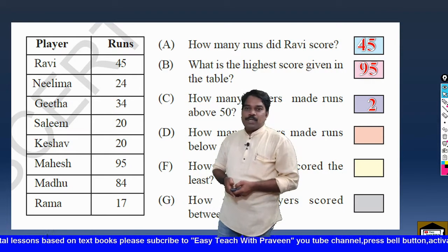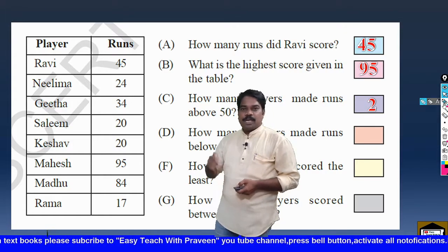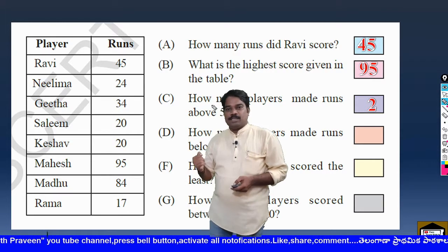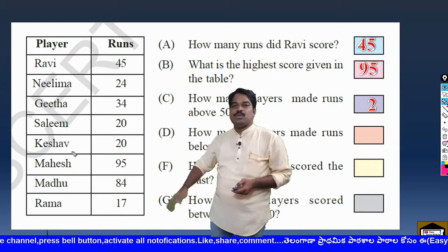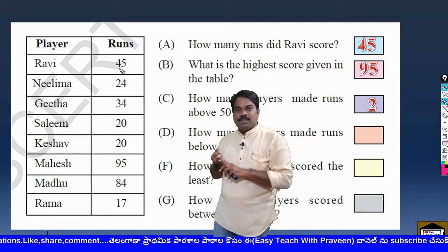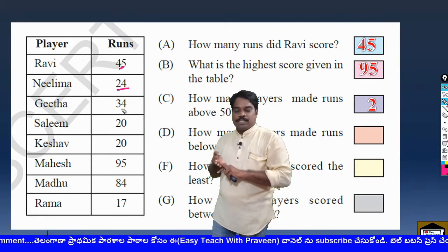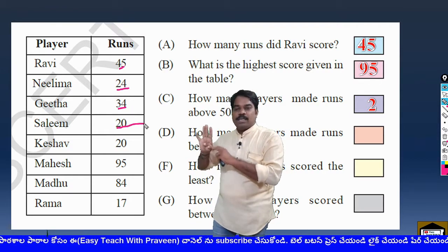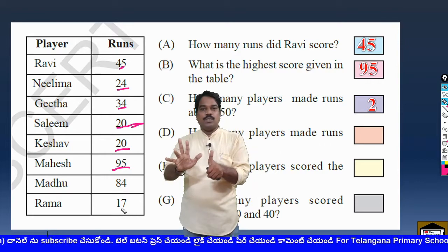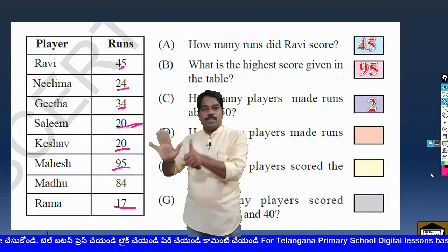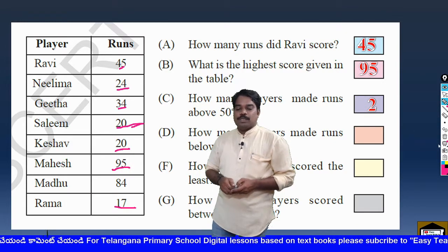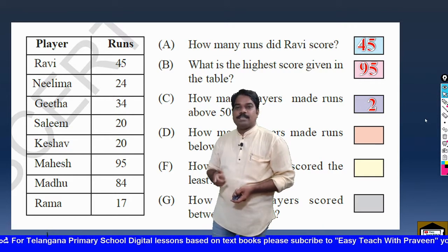The next question is: How many players made runs below 50? Below 50 means numbers from 49 down to 0. Ravi made 45 — below 50. Neelima made 24 — below 50. Geeta made 34 — below 50. Salim made 20 — below 50. Keshav made 20 — below 50. Rama made 17 — below 50. So 6 members made below 50 runs. The answer is 6.